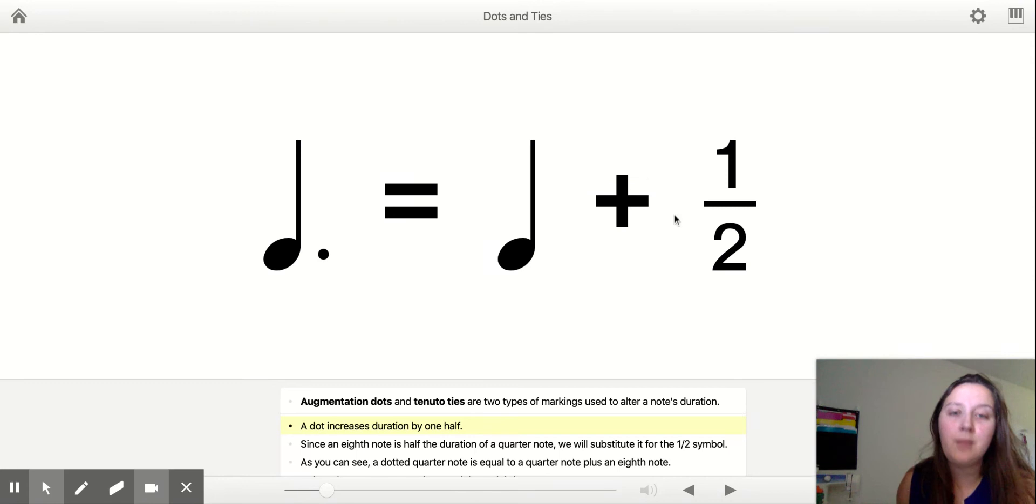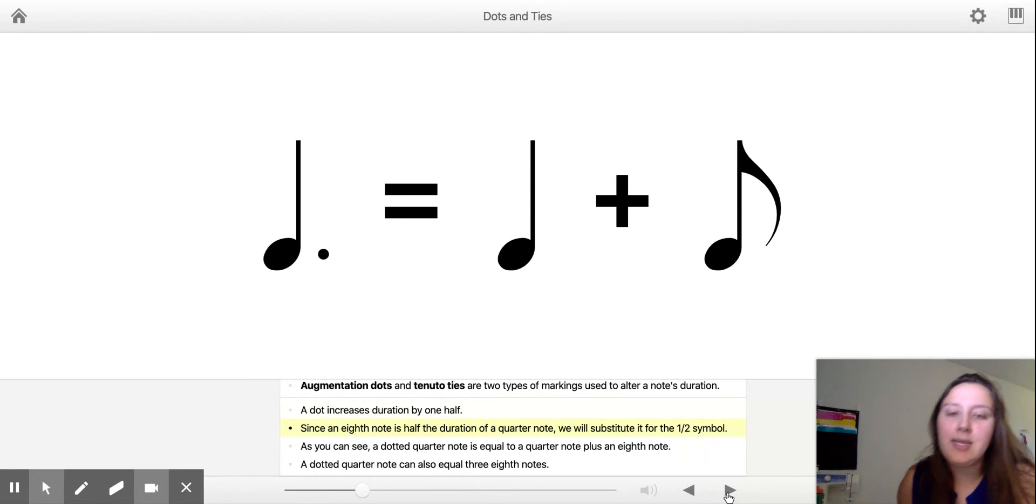If we're in 4-4 time, the quarter note is 1, half of 1 is 1 half, or half of a quarter note is an eighth note. Since an eighth note is half of the duration of a quarter note, we'll put the eighth note there.